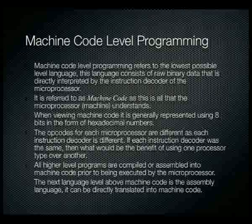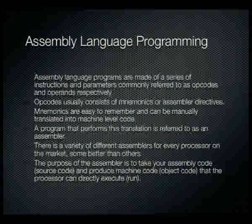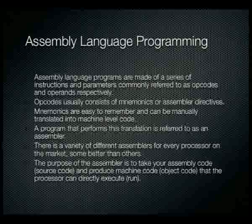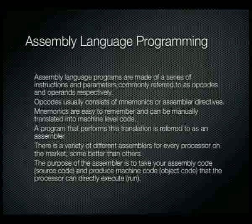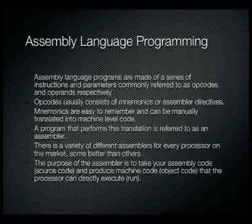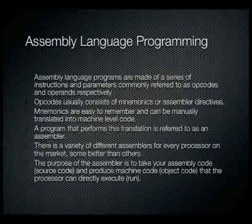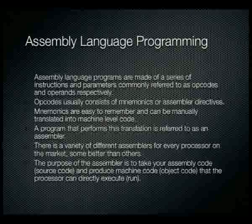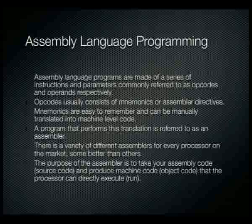Assembly language can be directly translated into machine code. Assembly language programs are made up of a series of instructions and parameters, commonly referred to as opcodes and operands. Opcodes usually consist of mnemonics or assembler directives. Mnemonics are easy to remember because their names directly translate into what action is being performed. The mnemonics can be manually translated into machine code as a direct one-to-one mapping, or we can use a program called an assembler to perform that translation for us.